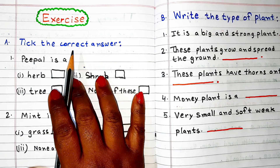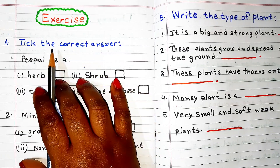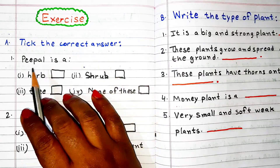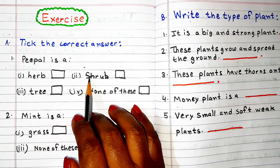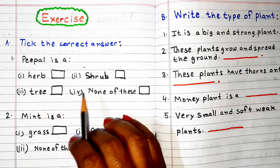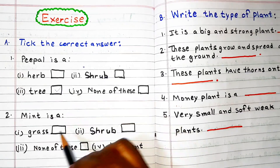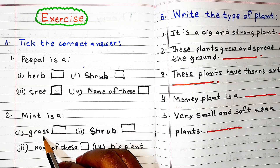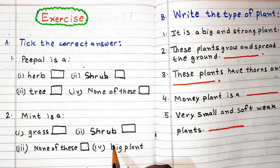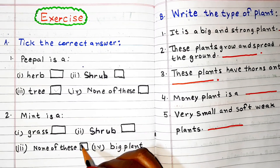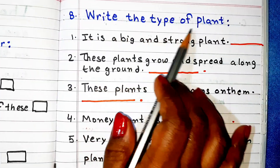Now we will solve exercises related to this chapter. First: tick the correct answer. Peepal is a — herb, shrub, tree, or none of these? Answer: peepal is a tree. Mint — is it grass, shrub, none of these, or a big plant? Answer: none of these — write the type of plant.